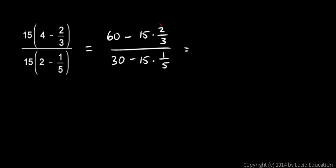So now let's just do these little operations here. And those turn out to be really easy. In the numerator I have 60 minus—and you see here 15 times 2 is 30, divided by 3 just leaves me with 10. And then in the denominator I have 30 minus—and you can see 15 over 5 is going to be 3. So 30 minus 3.